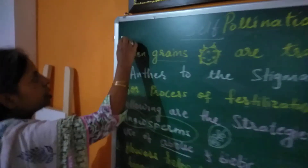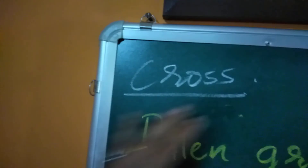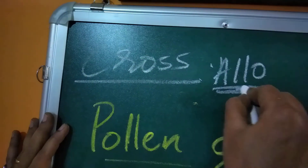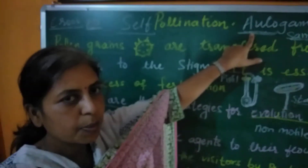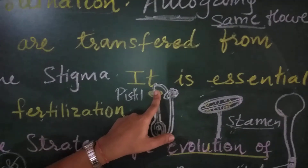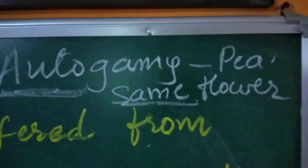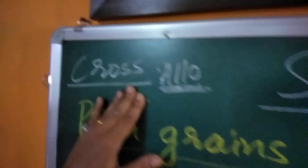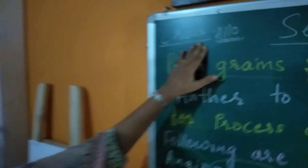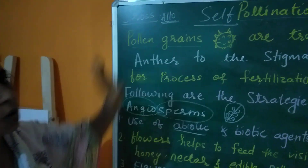Another type is cross-pollination, also called allogamy. Allo means cross, and auto means self. In autogamy, transfer of pollen grains occurs from the anther to the stigma of the same flower. In cross-pollination, pollen grains are carried from the anther of one flower to the stigma of another flower — that is called cross-pollination.